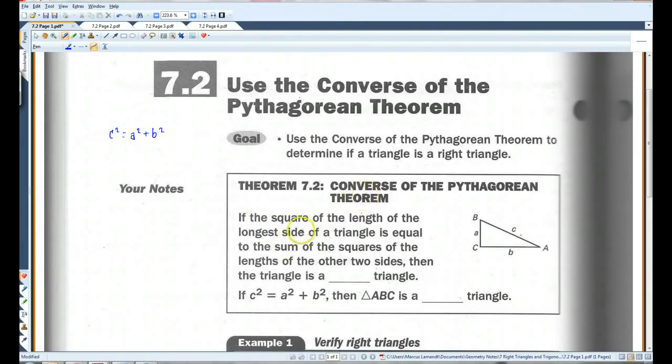This says the opposite of that. It says if the square of the length of the longest side of a triangle is equal to the sum of the squares of the lengths of the other two sides, then the triangle is a right triangle. So if this is true, then automatically you know it must be a right triangle.